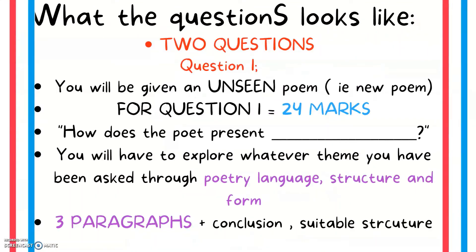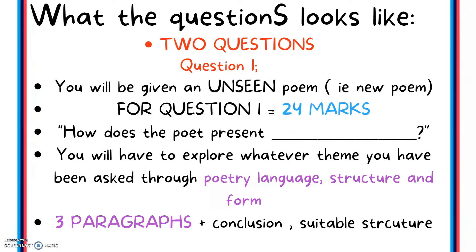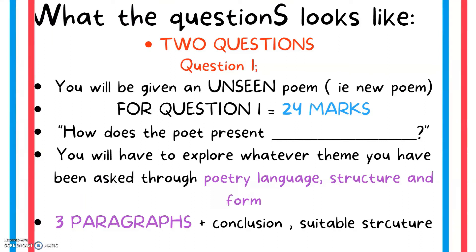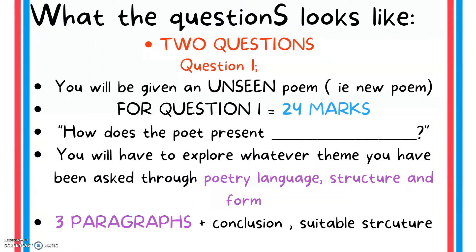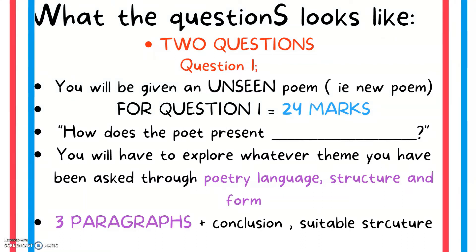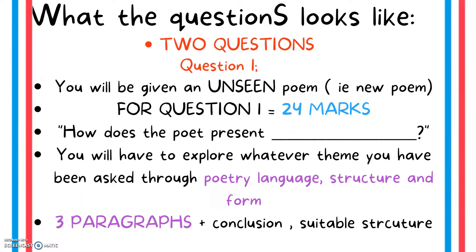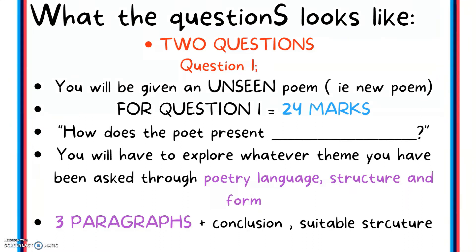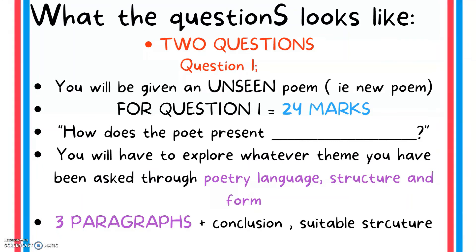So what will Section C's question look like? There are two questions. For Question 1, you'll be given an unseen poem — a poem you haven't seen before — and it is out of 24 marks. You'll be asked: how does the poet present the following in the unseen poem? You have to explore whatever theme you have been asked through poetry language, structure, and form. The best way to do it is probably three paragraphs plus a conclusion — that's a suitable structure and will definitely get you started.